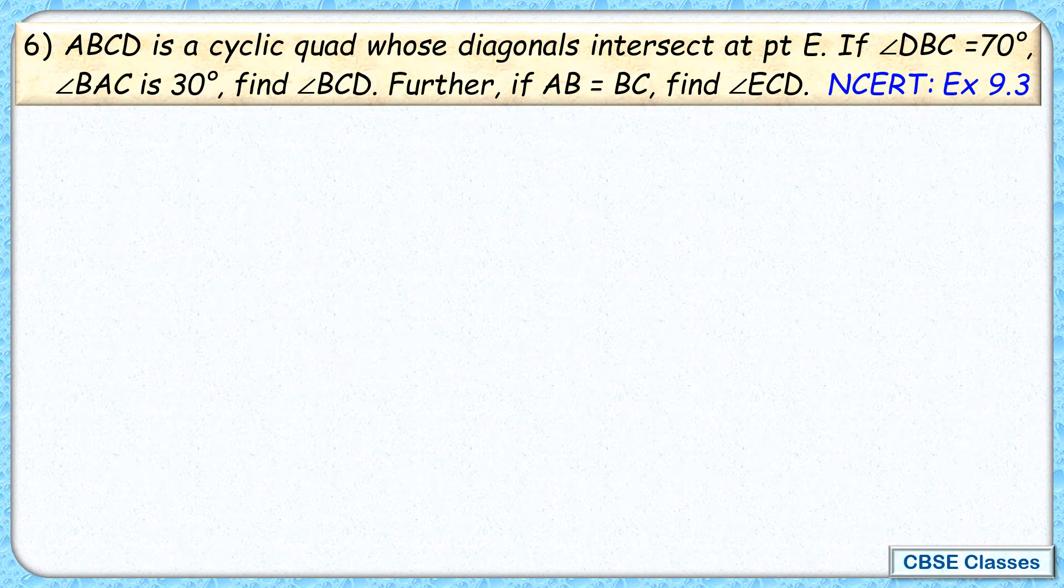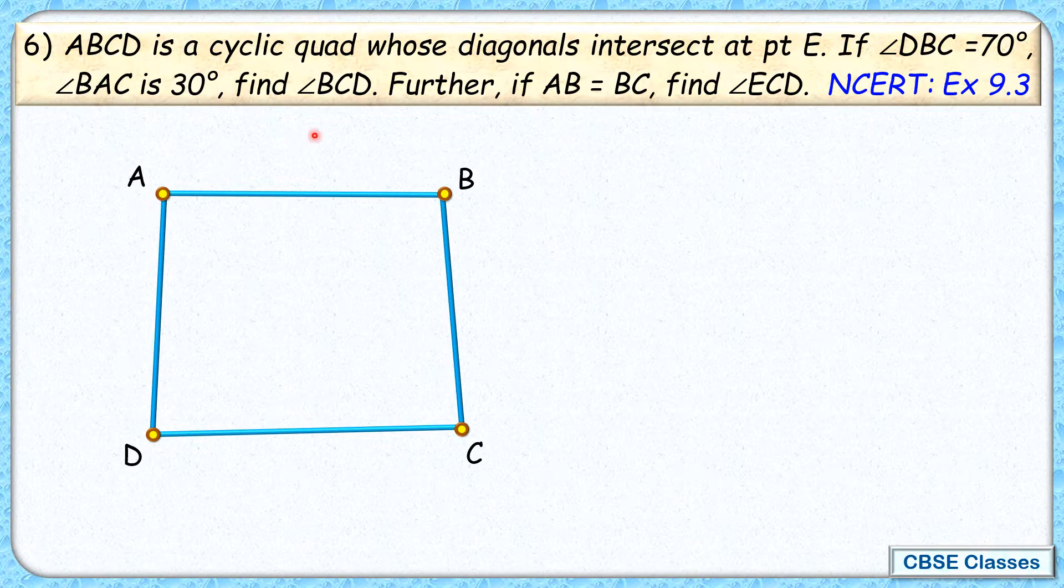Let's check the 6th question. Here we are given that ABCD is a cyclic quadrilateral. So basically, quadrilateral ABCD is there, and we can draw a circle passing through all four vertices.